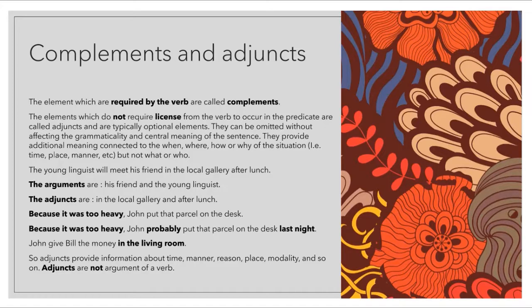The elements which are required by the verb are called complements. The elements which do not require license from the verb to occur in the predicate are called adjuncts, and are typically optional elements. They can be omitted without affecting the grammaticality and central meaning of the sentence. They provide additional meaning connected to the when, where, how, or why of the situation — for example, time, place, manner — but not what or who.